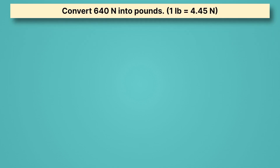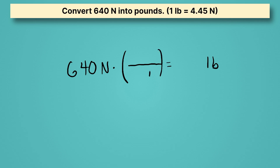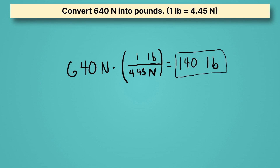Convert 640 Newtons into pounds. We start with 640 Newtons and do a conversion. We put Newtons on the bottom and pounds on top. We're told 4.45 Newtons equals one pound, so 4.45 goes with Newtons on the bottom and 1 goes with pounds on top. Dividing 640 by 4.45, we get 140 pounds after rounding to two sig figs. So the average person's weight is about 140 pounds — the unit we're used to seeing.